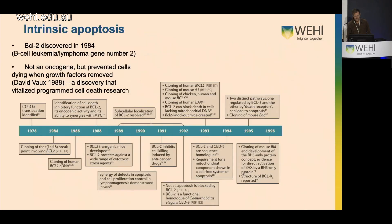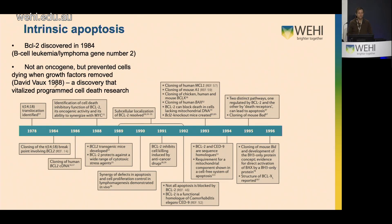The study of programmed cell death really took off when the function of BCL2 was discovered, revitalizing interest in how cell death might be manipulated to treat disease. BCL2 was named B-cell leukemia/lymphoma gene number two and was shown to be overexpressed in cancers. At the time it was thought to be an oncogene driving cell growth and proliferation, but David Vaux, a PhD student at WEHI in Jerry Adams and Suzanne Cory's lab, showed it actually prevented cell death when expressed in cancer cells, identifying BCL2 as an inhibitor of cell death.